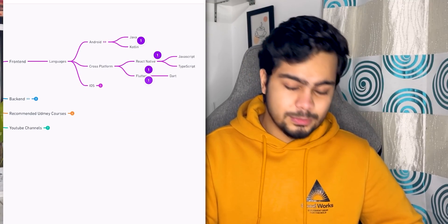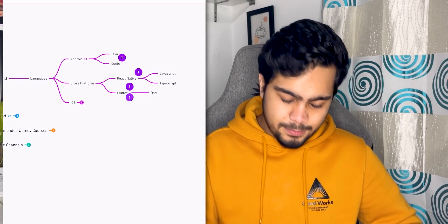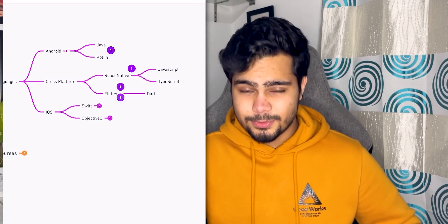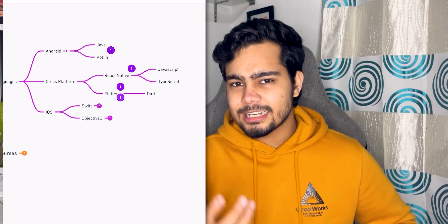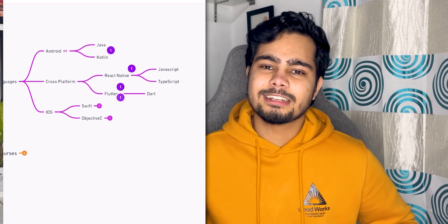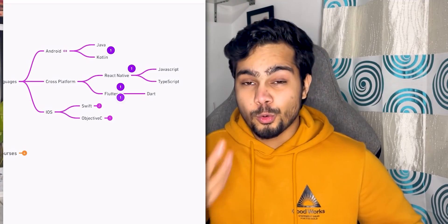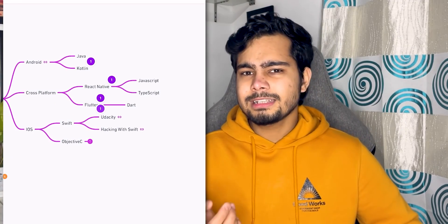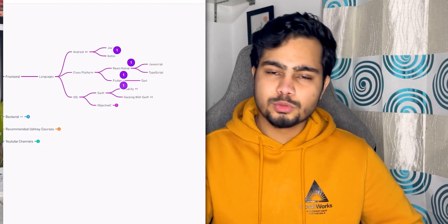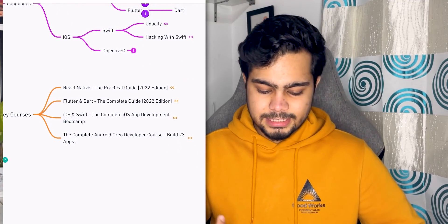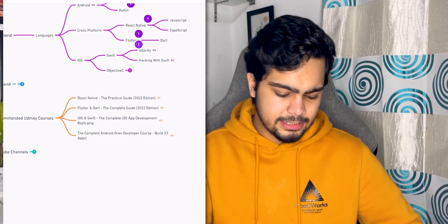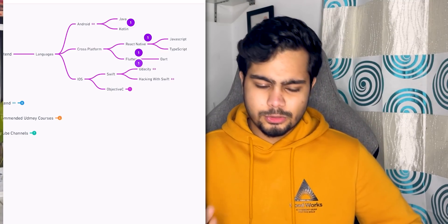Next we are looking at iOS development. You have to learn two languages: Swift and Objective-C. New iOS code is written in Swift; there is no new code in Objective-C. But if you are working in a company on an older project, there is a lot of Objective-C to understand. Generally though, Swift is what you will use. There are two resources: Udacity and Hacking with Swift. I used Hacking with Swift for reading, and the iOS and Swift Complete iOS App Development course by Angela Yu — it had many small projects and was a great way to learn.